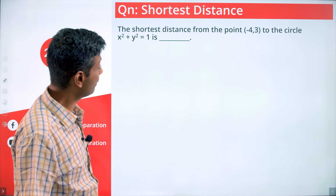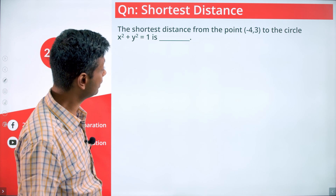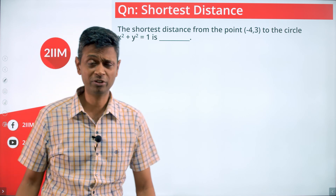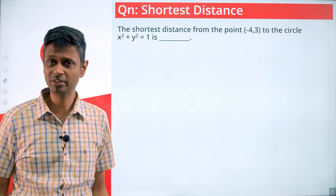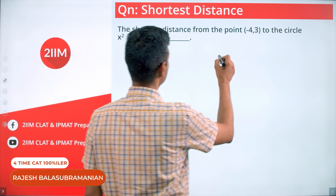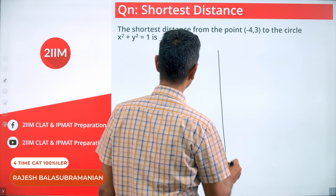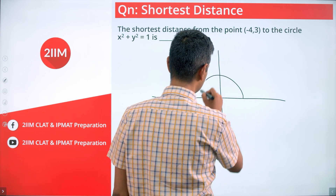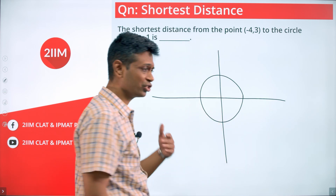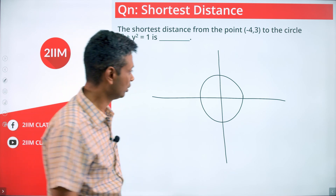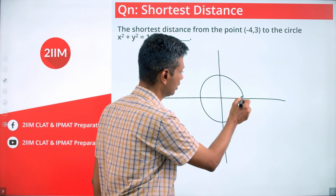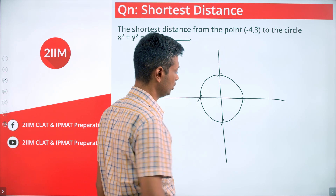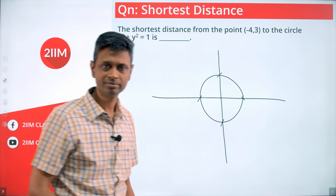The shortest distance from the point (-4, 3) to the circle x² + y² = 1. Seems like a tough question but it's not that difficult. Let us draw the circle x² + y² = 1 — it's a nice circle with the origin as center and radius 1. The key points on the circle are (1,0), (-1,0), (0,1), (0,-1), etc.